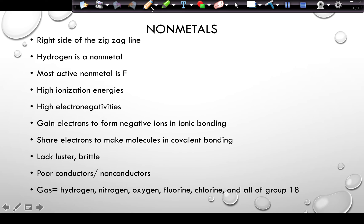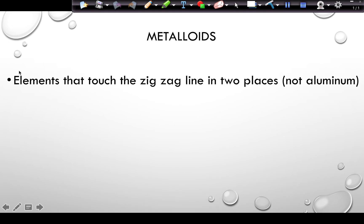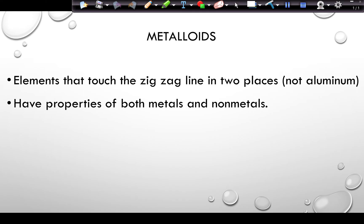Metalloids are the elements that touch the zigzag line in two places — but aluminum is a metal, not a metalloid. These elements tend to have properties of both metals and non-metals. Since there is a gradual change from most non-metallic at fluorine to most metallic at francium, the metalloids sit in between metal and non-metal.